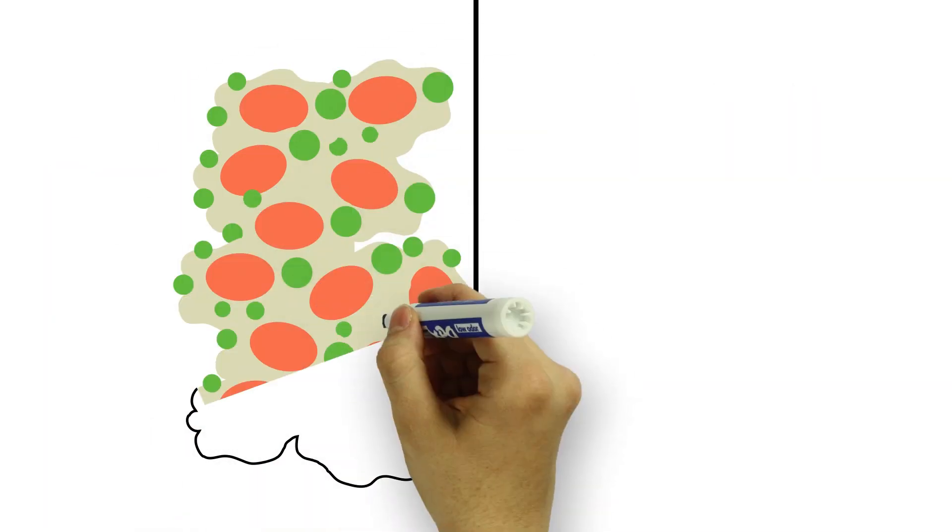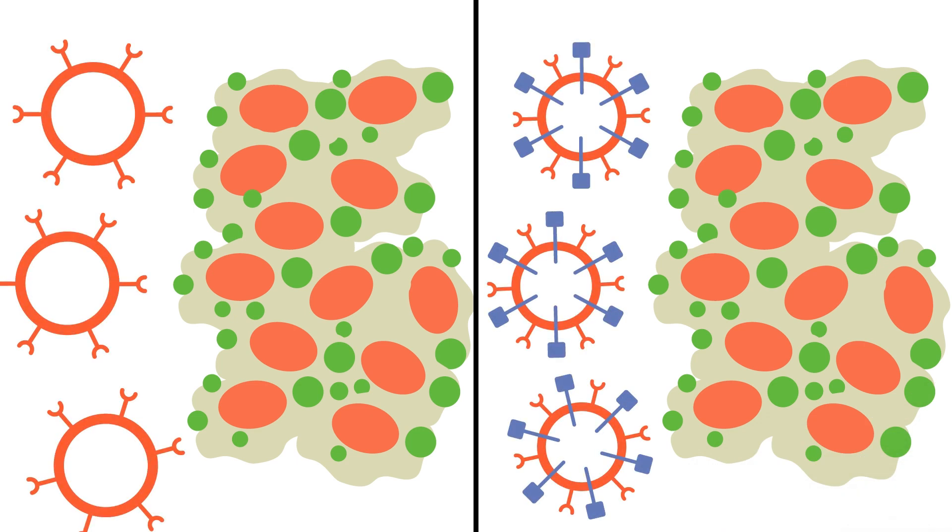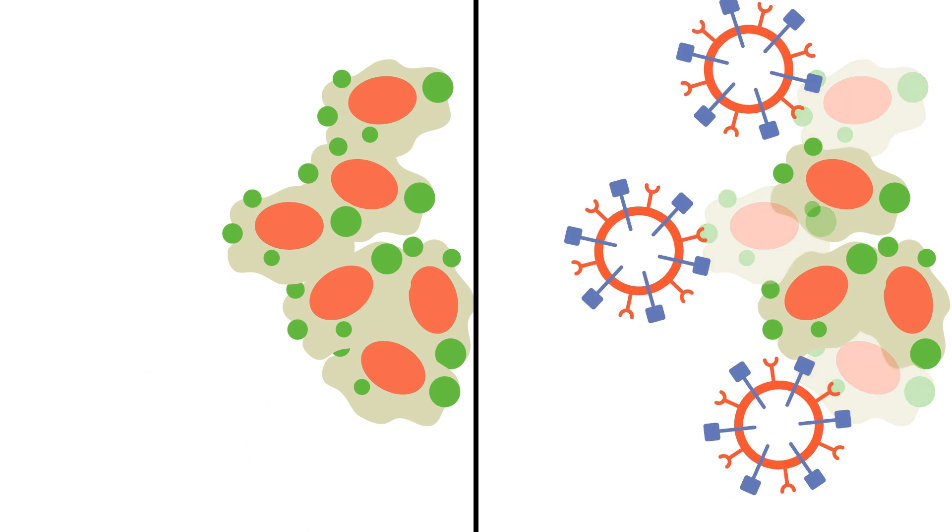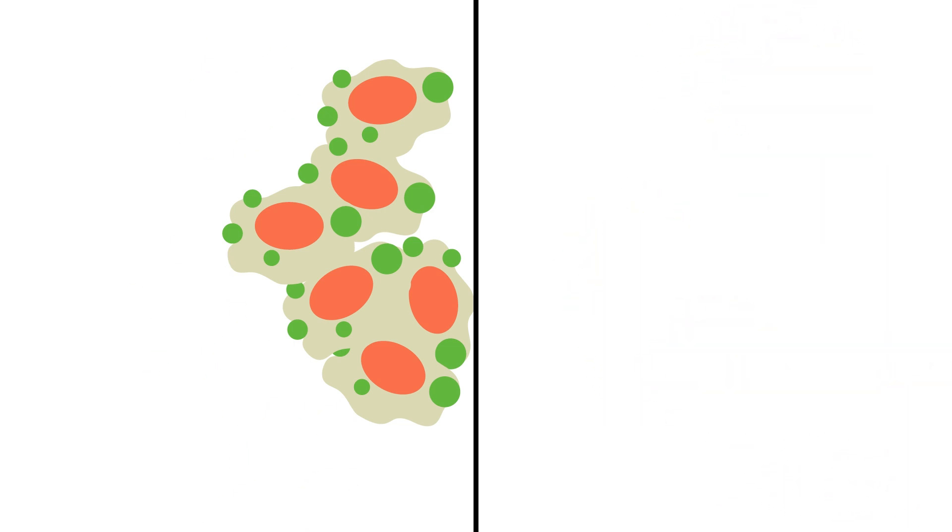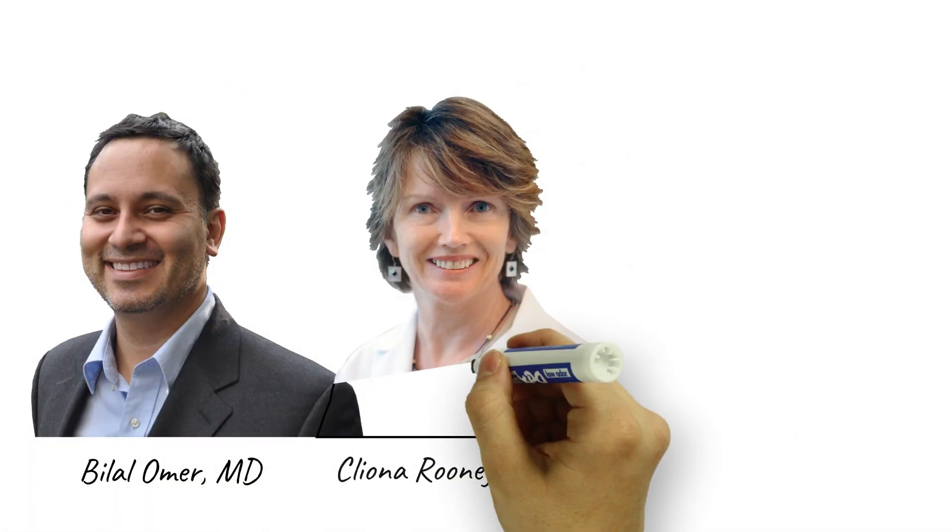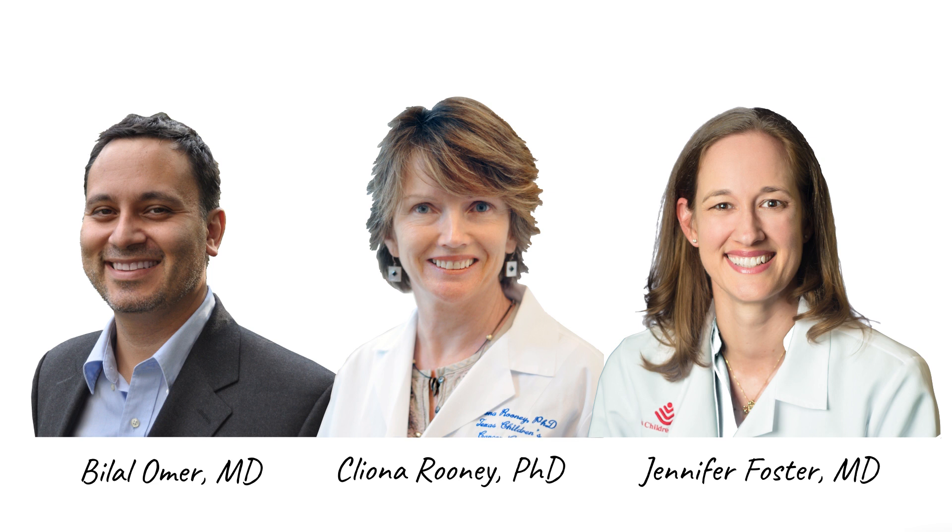As a result, these C7R-enhanced GD2 CAR T-cells continue eliminating tumor cells long after normal GD2 CAR T-cells have stopped working, so they can tackle the tough tumors like neuroblastoma. Dr. Bilal Omer and Dr. Cleo Rooney are now leading the clinical team at Texas Children's Hospital to bring this novel immunotherapy to neuroblastoma patients in a new clinical trial.